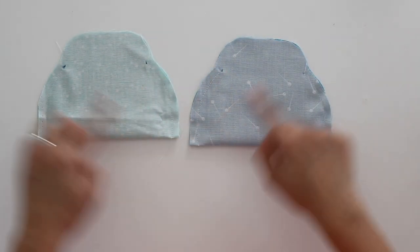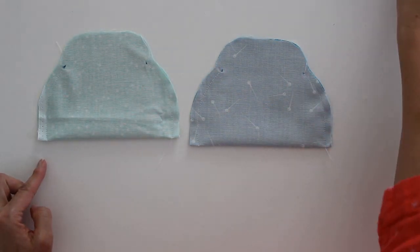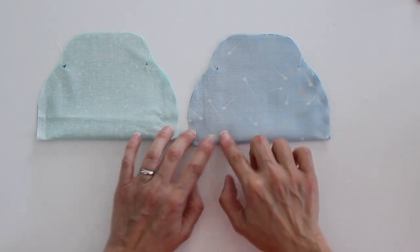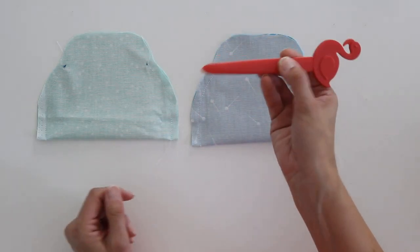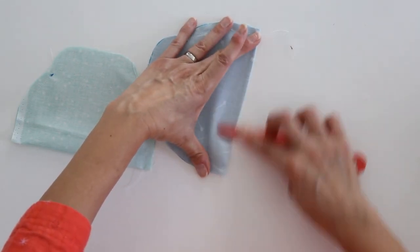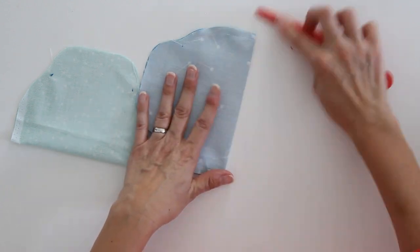The next step, once you have that stitching done, is you want to really press in this bottom edge fold here. And you can do that with finger pressing, you can do that with an iron, you can even use a stiletto like this one I have here, which I do have linked below, and you can use that to press that edge.